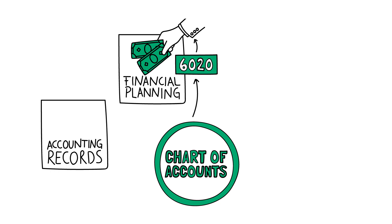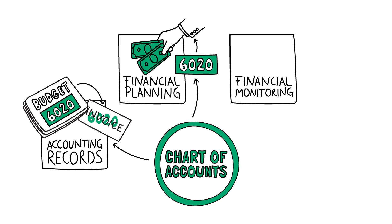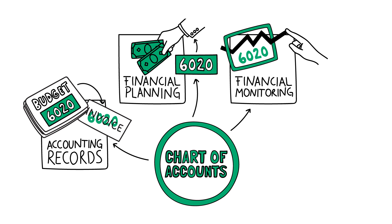Next, during the implementation phase of the project, the project team refers to the account codes in the budget to ensure that invoices and receipts are coded to the right budget line items. During the financial monitoring phase, the codes from the chart of accounts are used to ensure project spending is consistent with what was estimated in the budget.